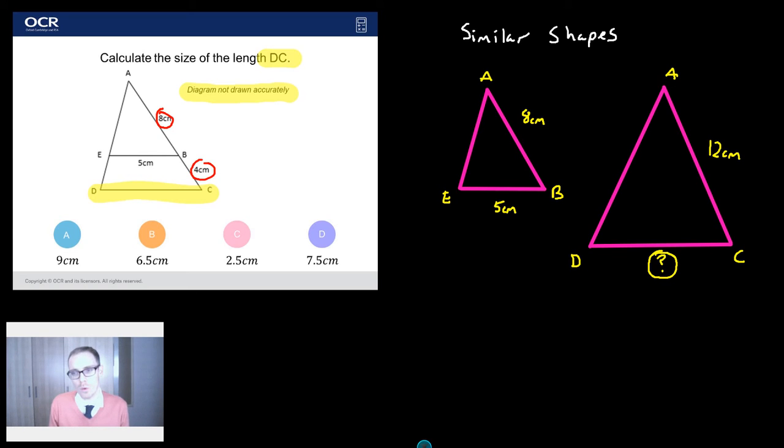Okay so similar shapes. We've got to work out how we get from the smaller shape to the larger shape. And specifically what do we multiply by? Because similar shapes are an enlargement scale factor and you multiply to get there.